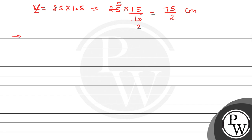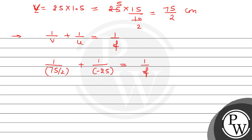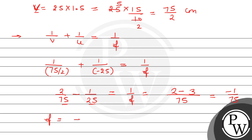Now the second step is to find the focal length using the mirror formula: 1 by V plus 1 by U equals 1 by F. So 1 by V equals 2 divided by 75, and 1 by U equals 1 divided by minus 25. Therefore: 2 divided by 75 minus 1 divided by 25 equals 1 by F. Taking LCM as 75: 2 minus 3 divided by 75 gives minus 1 divided by 75. So F equals minus 75.